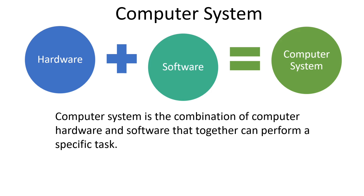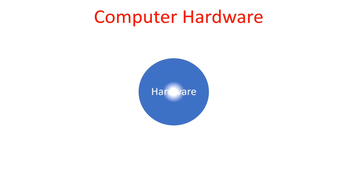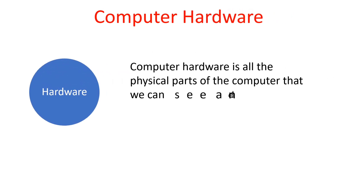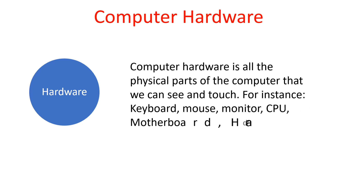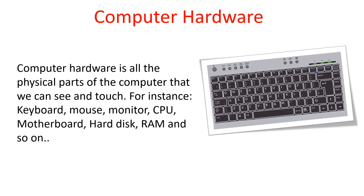Now let's see what computer hardware and software are in detail. Computer hardware is all the physical parts of our computer system that we can see and touch — all the solid parts that are visible to us that we can see, touch, and feel. For example, the keyboard is a computer hardware part that we can see, touch, and feel.